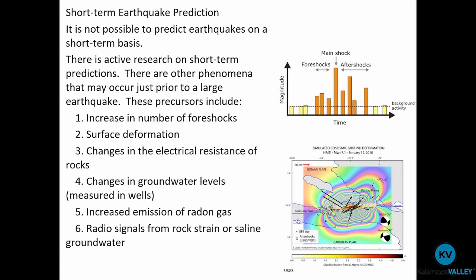Much of the subsurface in areas prone to earthquakes is fractured rock. Here in Michigan, if we dig down, we find clay, sand, and gravel — our aquifers are hosted within the small pockets between those grains. Out west in California, the water is in between small micro-fractures within rock. So if foreshock activity creates new fractures or shifts the rock so those fractures become closer together, we can see water levels go up or down. We're just looking for a change.